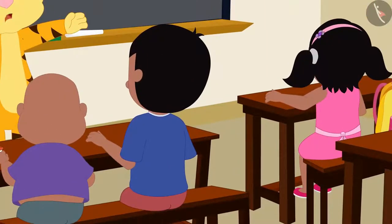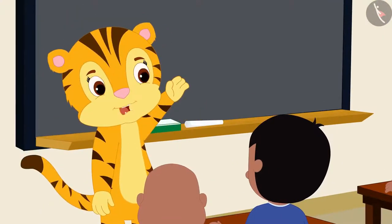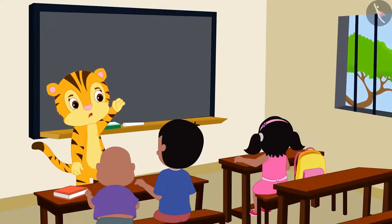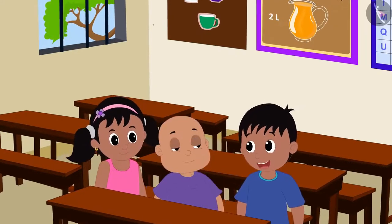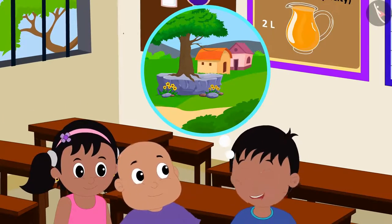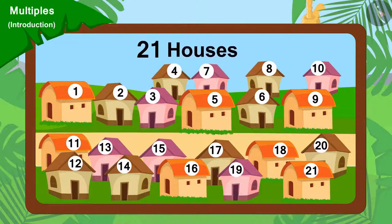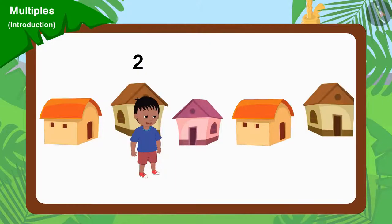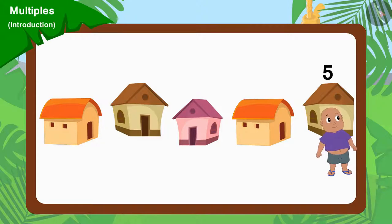Raju, Pinky and Bablu have been assigned the task to collect donations to help the poor by their teacher Mrs. Khan. Raju told Pinky and Bablu a plan. He said that they would not go to the same house but go to different houses. There are a total of 21 houses in the village. Raju will go to every second house, Pinky will go to every third house and Bablu will go to every fifth house.